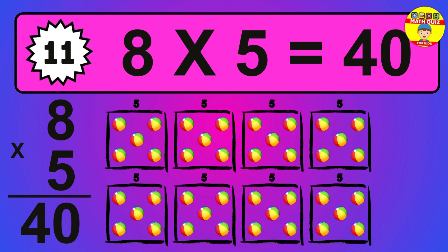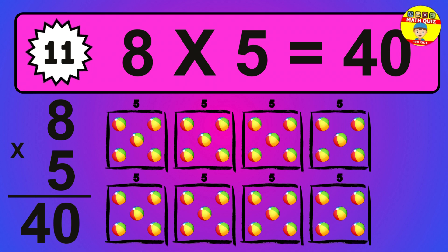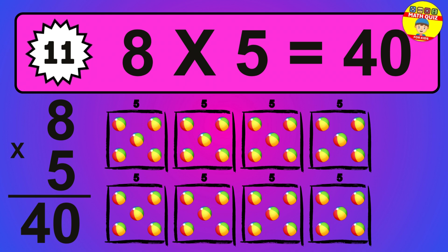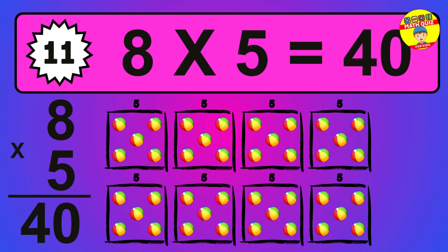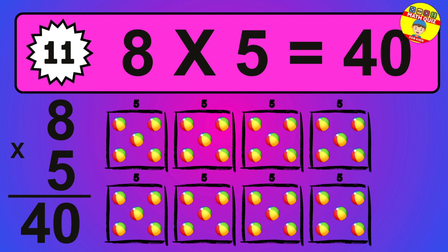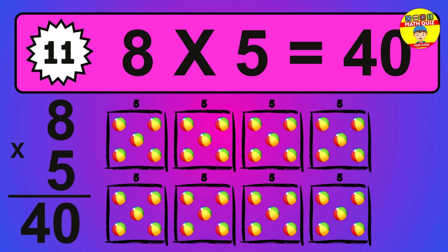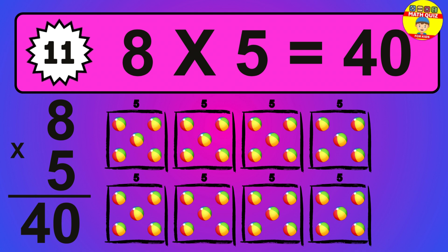Question 11. 8 times 5 equals what? To calculate, we have 8 groups with 5 balls each one. So how many balls do we have? 40 balls.